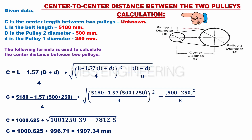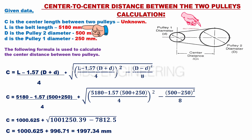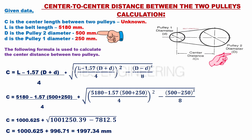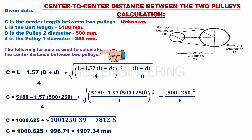Next, we'll learn how to calculate the center to center distance between two pulleys. Given data: C is the center length between two pulleys — unknown. L is the belt length: 5,180 mm. D is the pulley 2 diameter: 500 mm. d is the pulley 1 diameter: 250 mm. The following formula is used to calculate the center to center distance between the two pulleys.